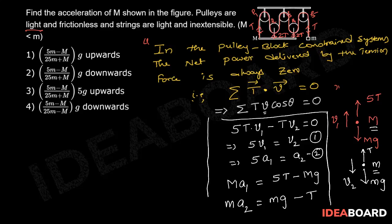Now, in the problem, he is asking to find the acceleration of capital M that is A1. So, let us eliminate A2 from these two equations. So, from the second equation, we can write A2 as 5 times A1.